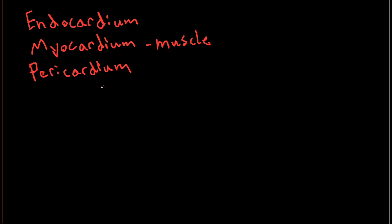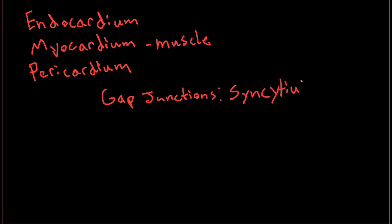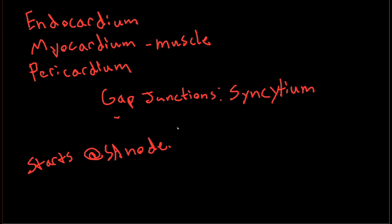Cardiac muscle has an important feature similar to smooth muscle: gap junctions. These are great for communicating between cells and allow all the muscle to contract together in a syncytium. Normally, the action potential for heart muscle starts at the SA node and then travels down the heart utilizing these gap junctions, so everything contracts in sync.